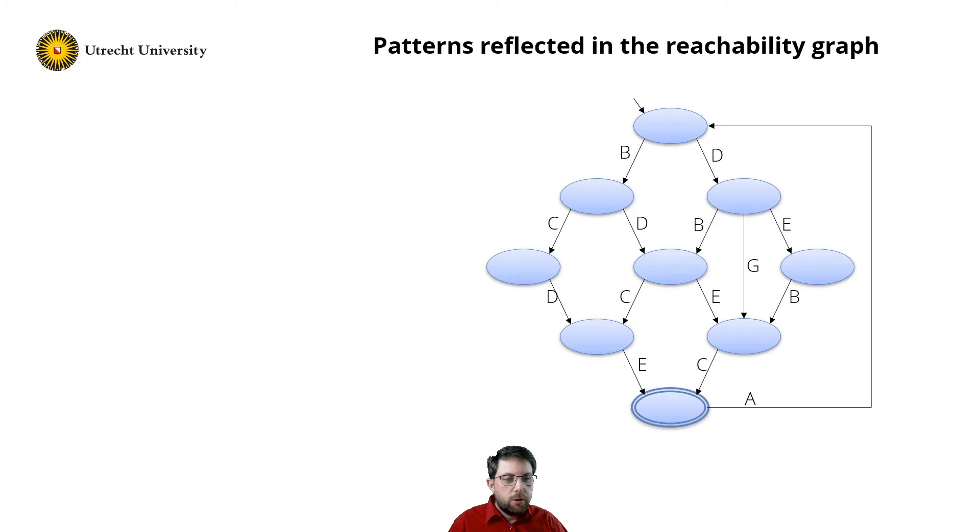As a first step, I label all the states in the system. Next, I observe that the system starts with transition B and transition D. So let's focus on the transition B first.